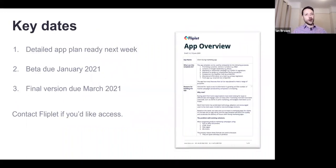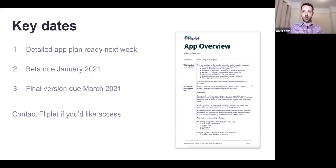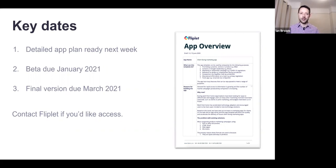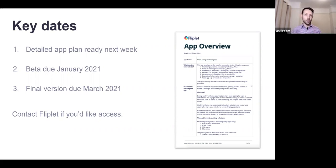If you've liked what you've heard and would like to get started, we will have a detailed app plan ready next week, which will enable you to share a document with your colleagues to decide whether to use the virtual event app. We intend for the beta to be available in January 2021, and we expect the final version will be due in March 2021. We're hoping we can bring these dates forward, but I believe these are realistic dates given how busy we are. Obviously if you've got any other questions, you can contact Fliplit at any time.